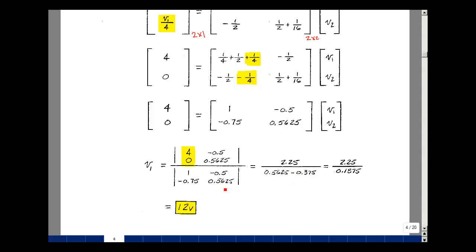For the denominator, 1 times 0.5625, and then a minus the product of these two. And the minus signs cancel, and one extra minus sign, that's 0.375. And that ratio turns out to be 12 volts.